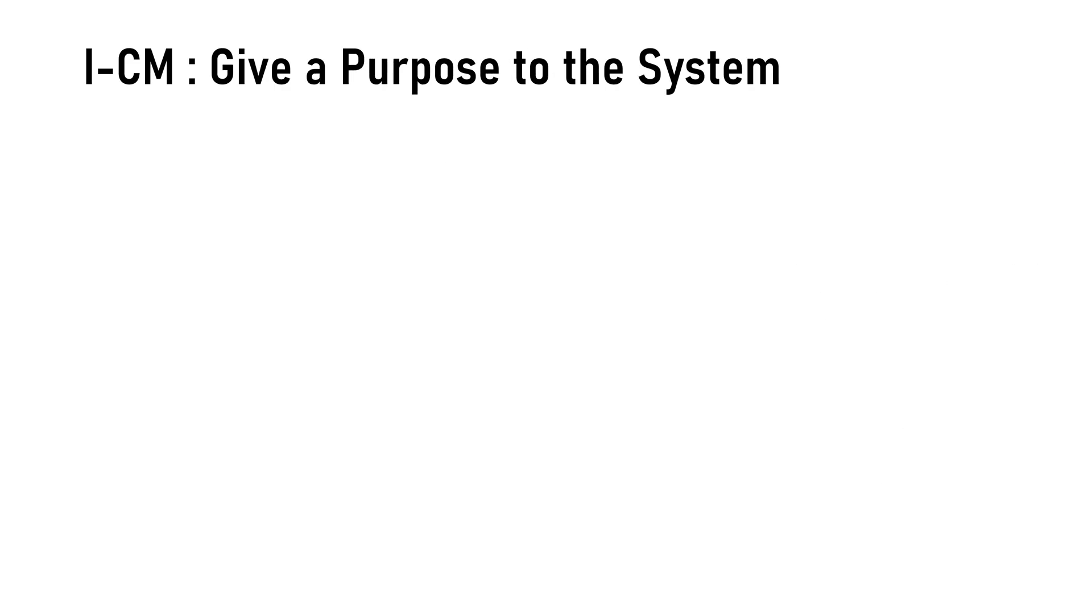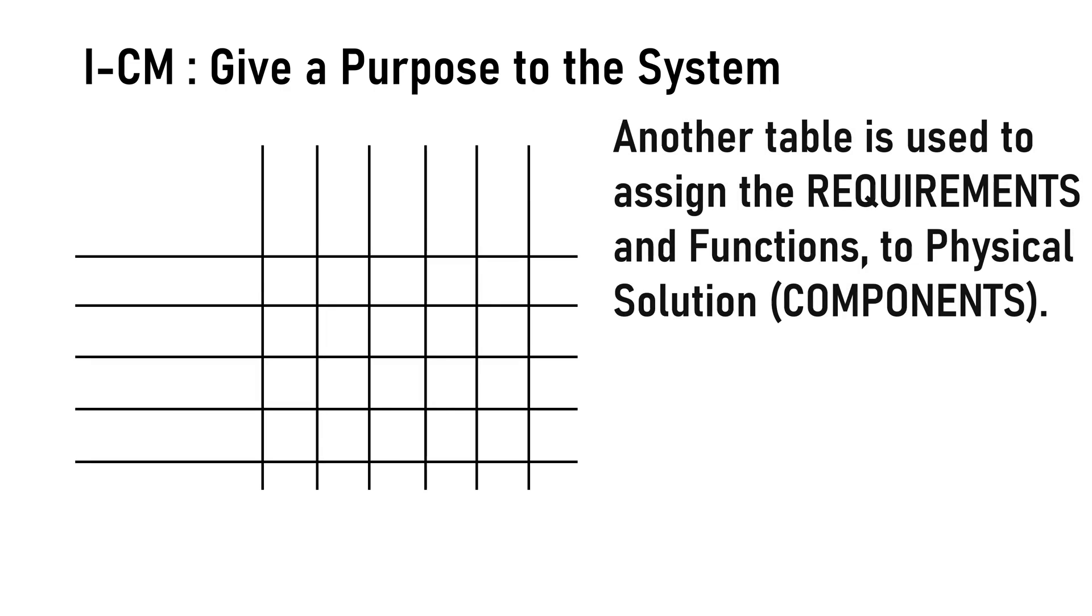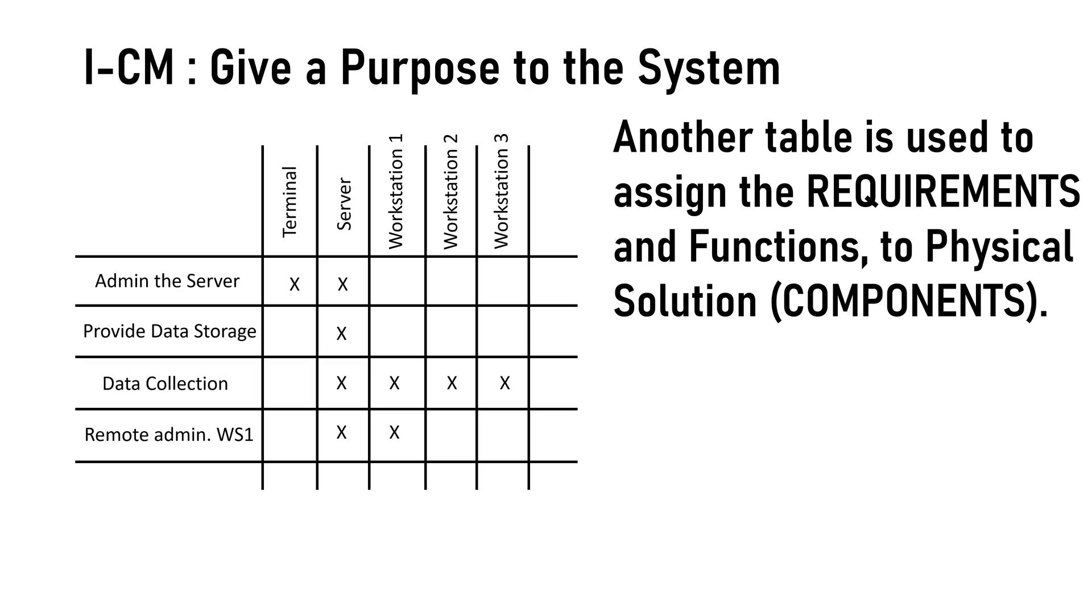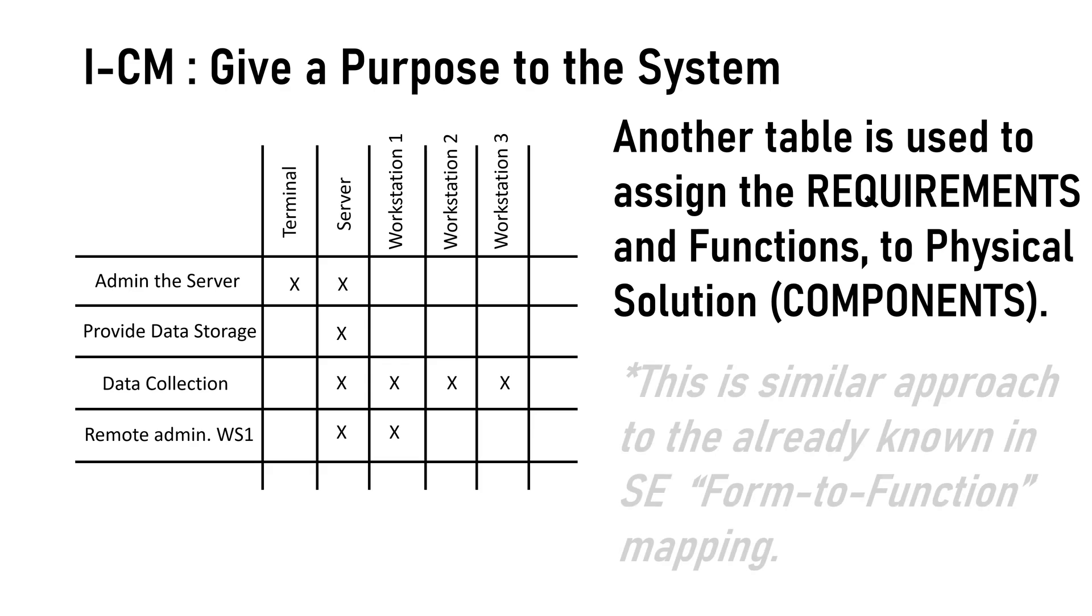After we have seen how a system is represented in ICM, let's go a step further and give a purpose to the system. This is done in another table where we put again the components in the columns and the requirements and functions in the rows. Inside the table for each function we mark the components which are involved to deliver it. This approach is similar to the already known in systems engineering form to function mapping.